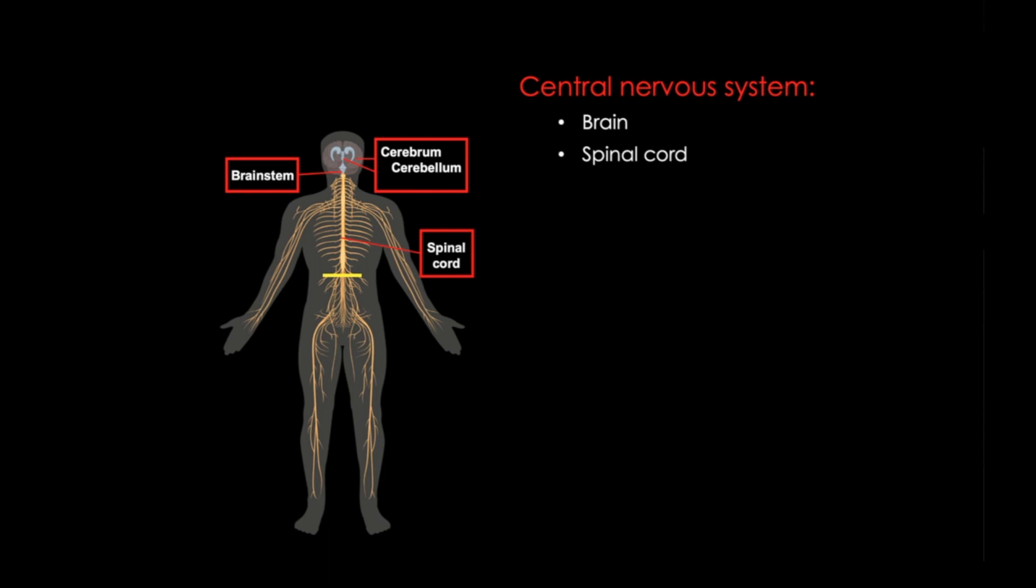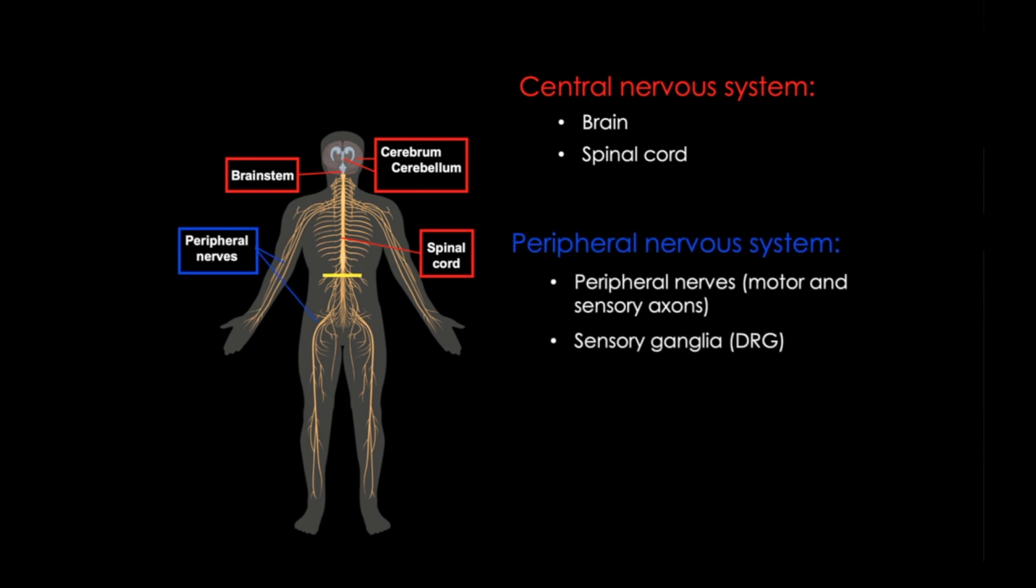And the peripheral nervous system, which receives sensory information from the outside world and conditions in the body, in addition to transmitting signals to effectors in our muscles and glands.